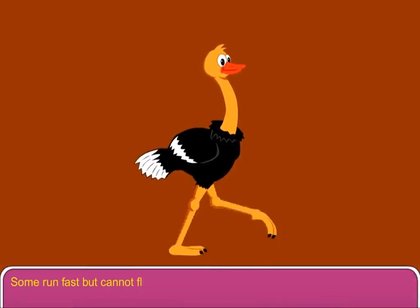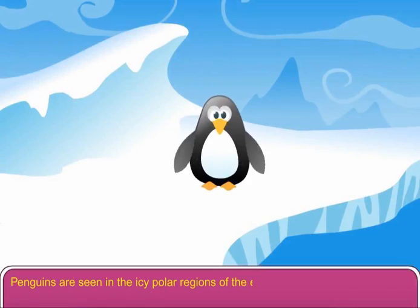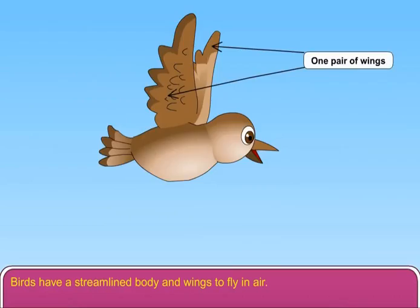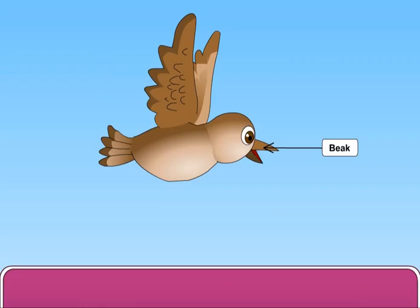Penguins are seen in the icy polar regions of the earth. Birds have a streamlined body and wings to fly in air. Their bones have air cavities that make them light in weight. They have beaks instead of a mouth.